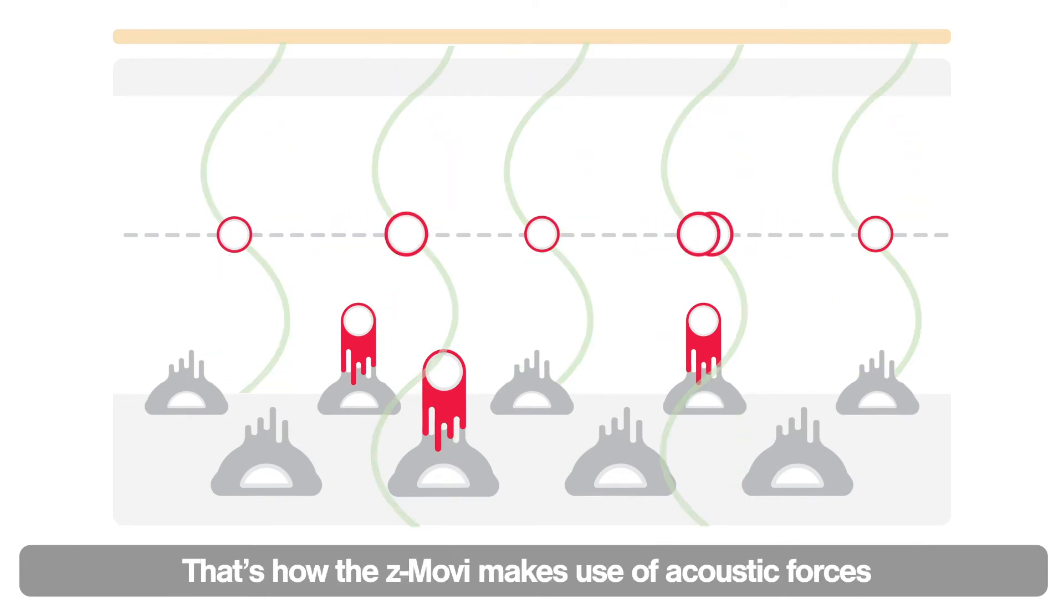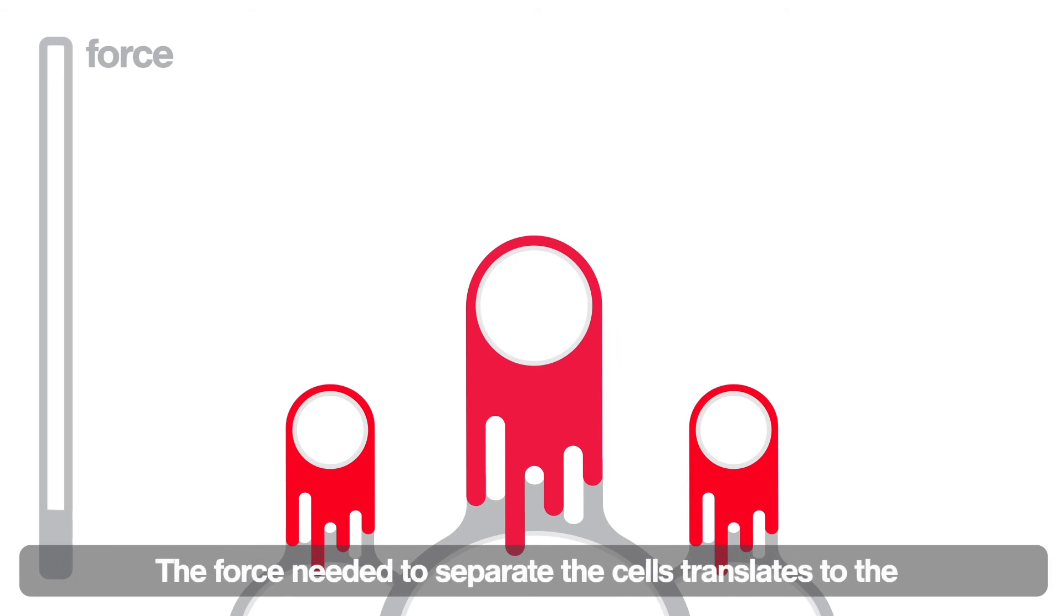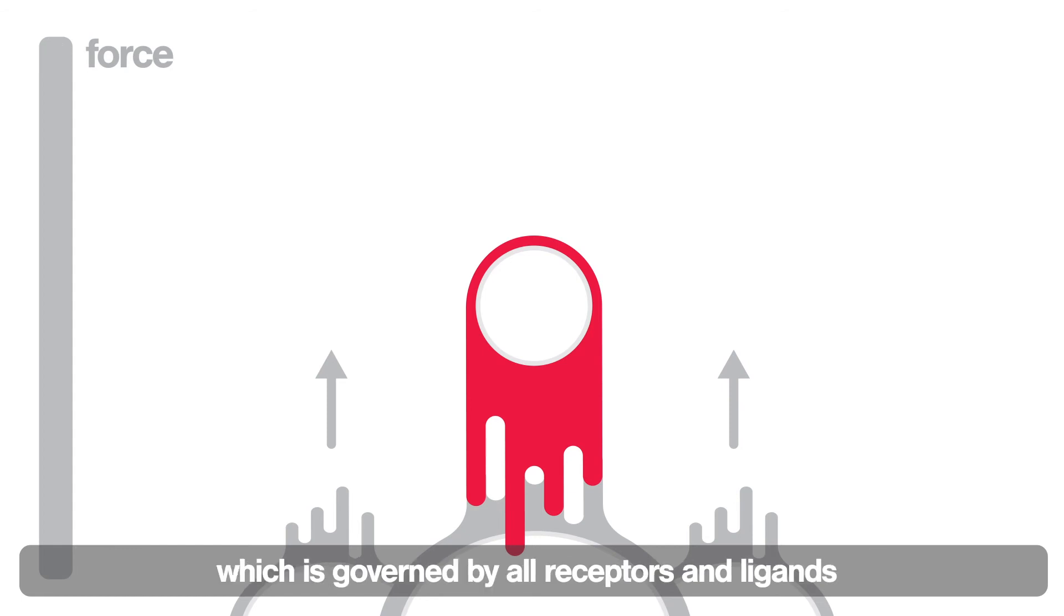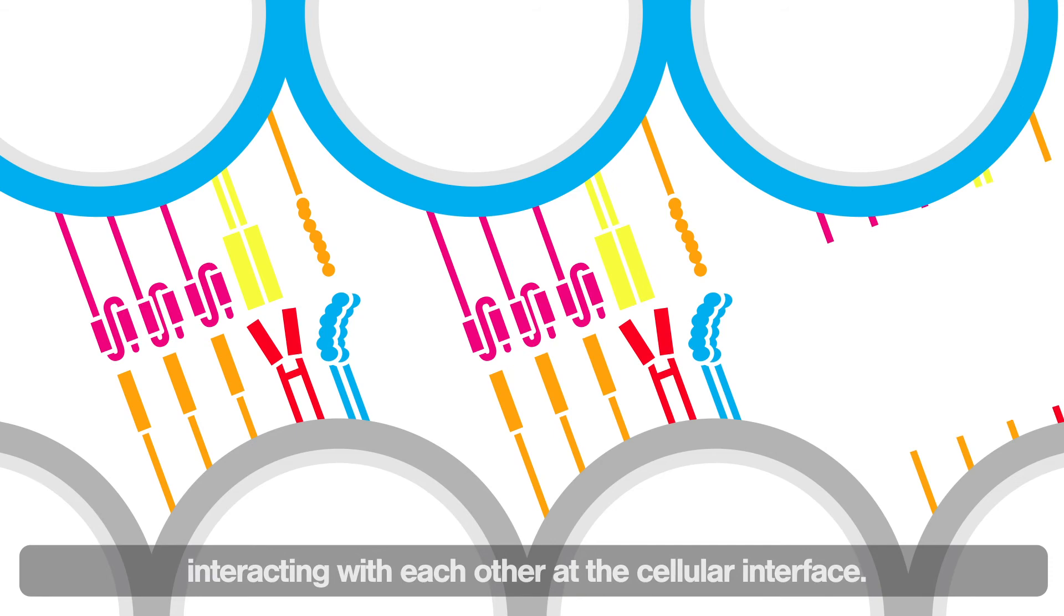That's how the z-Movi makes use of acoustic forces to separate cells and provide a direct readout of cellular avidity. The force needed to separate the cells translates to the binding strength between effector cells and cancer cells, which is governed by all receptors and ligands interacting with each other at the cellular interface.